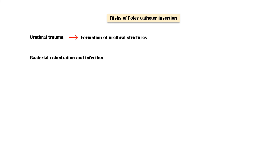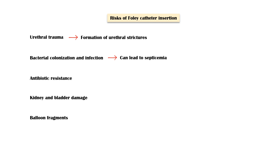In rare instances, bacterial colonization can lead to septicemia. Antibiotic resistance is another complication of urinary catheters. Other risks include kidney and bladder damage, and retention of balloon fragments if the balloon bursts within the bladder. These retained fragments can lead to formation of bladder stones later in life.